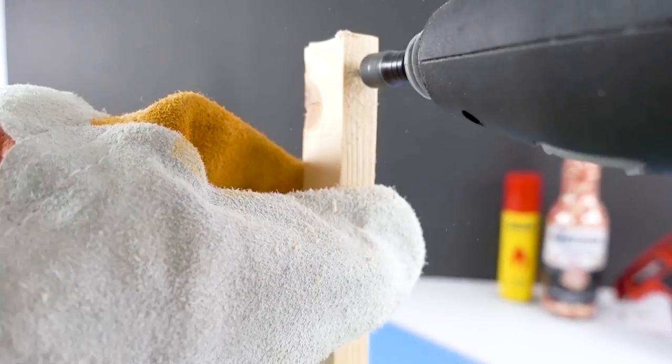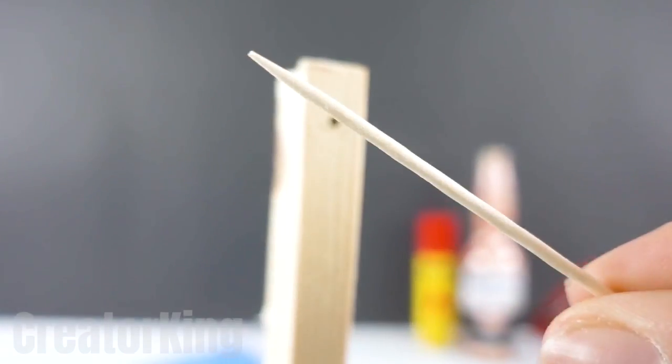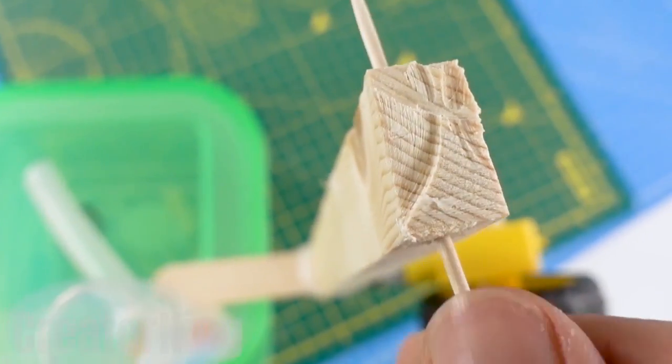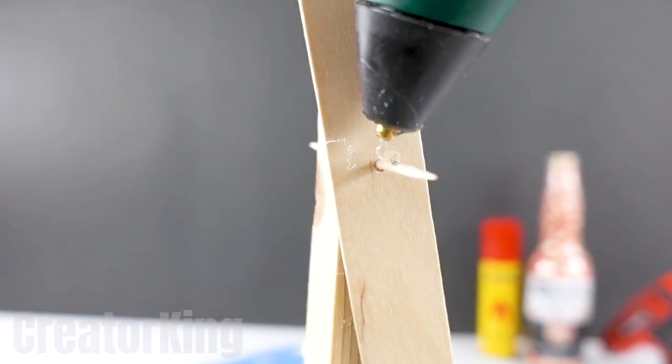Drill a hole all the way through the vertical piece of wood and put a toothpick through it.